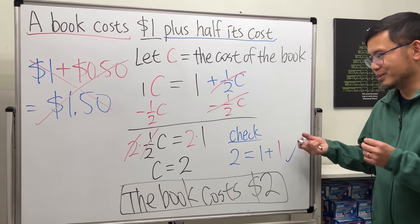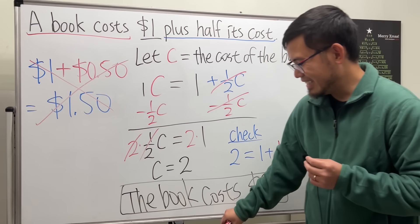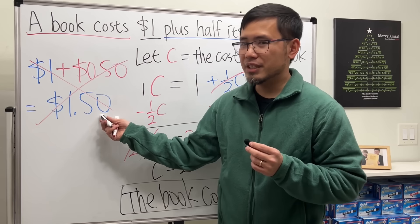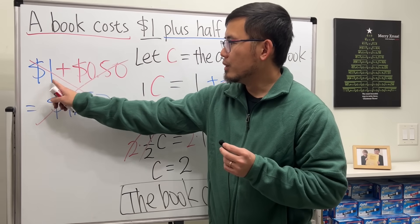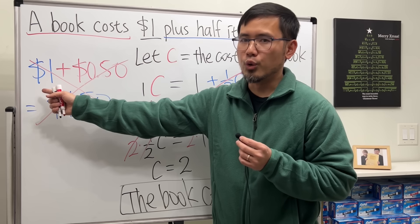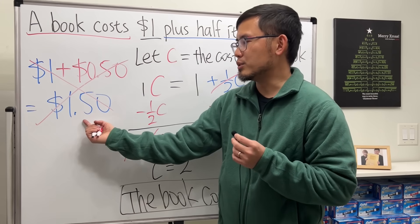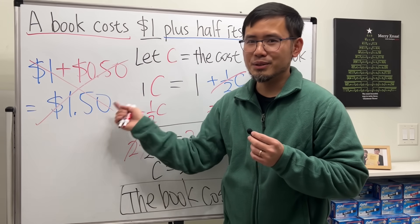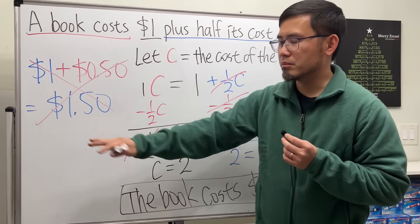All right, again, the biggest mistake for this right here is that the moment you put down the 50 cents, you are assuming the book costs $1 already. And then at the end you say that's $1.50, so it's a contradiction—meaning wrong.